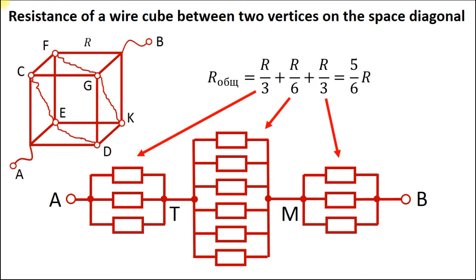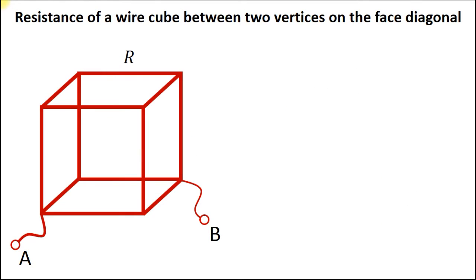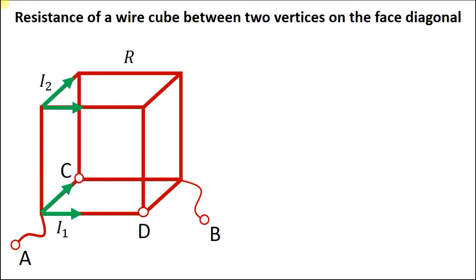Now let's calculate the cube resistance between two vertices on a face diagonal. In this case, we have two pairs of points with the same potential. Look at this picture — currents through edges AC and AD are the same, so edges AC and AD are equivalent. That's also true for the directions AE and AD. So the points C and D, and also the points E and F, are at the same potential. And once again, we can merge points with the same potential, and then we can easily draw the equivalent circuit.